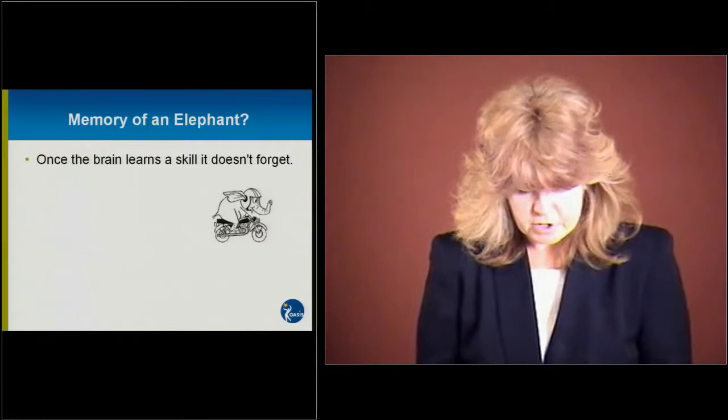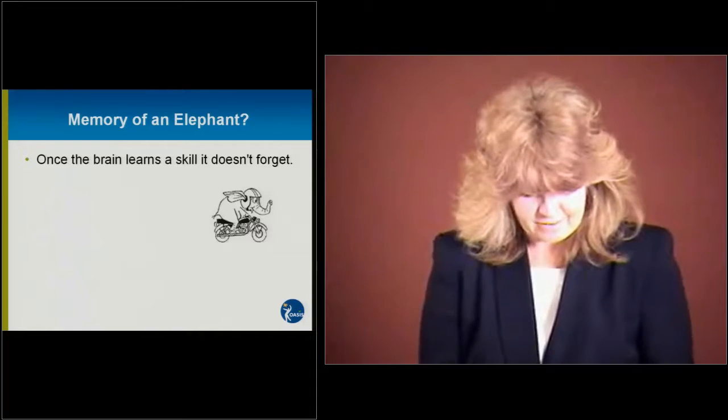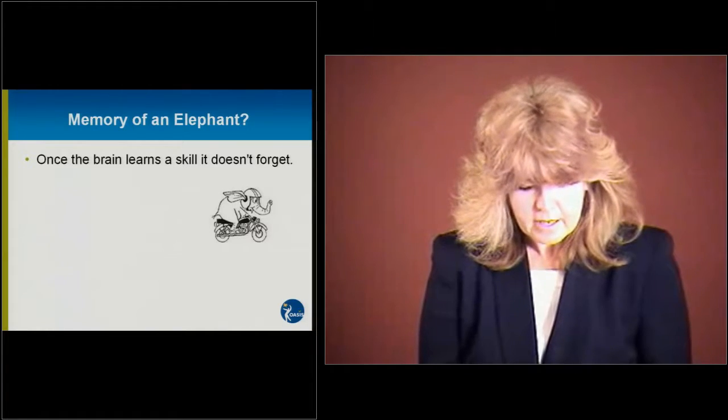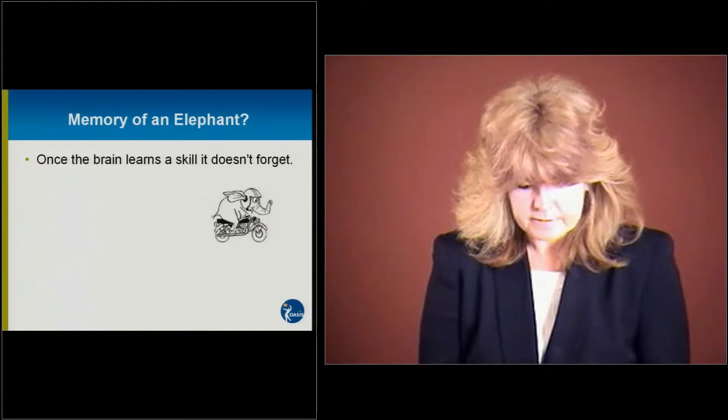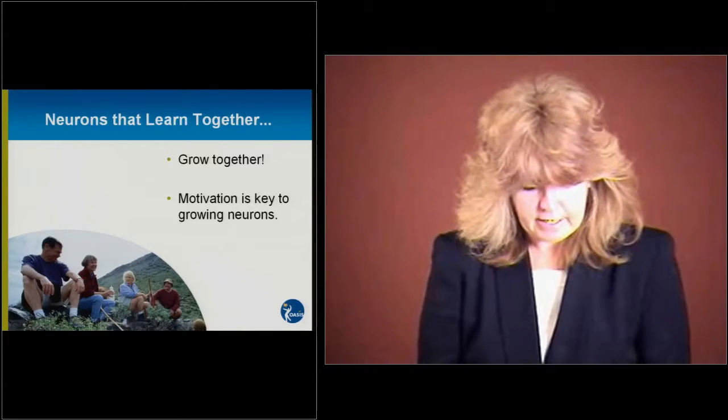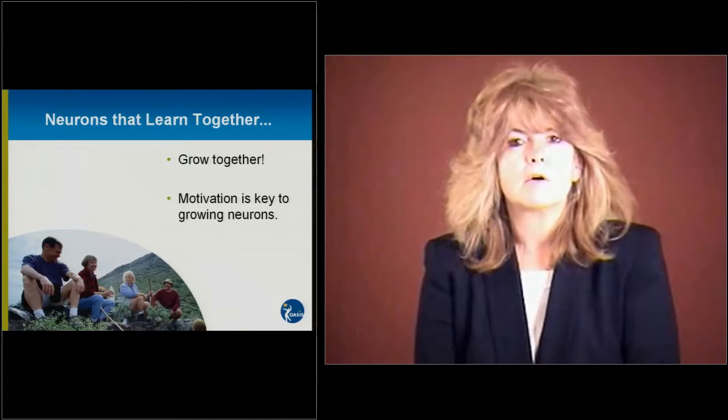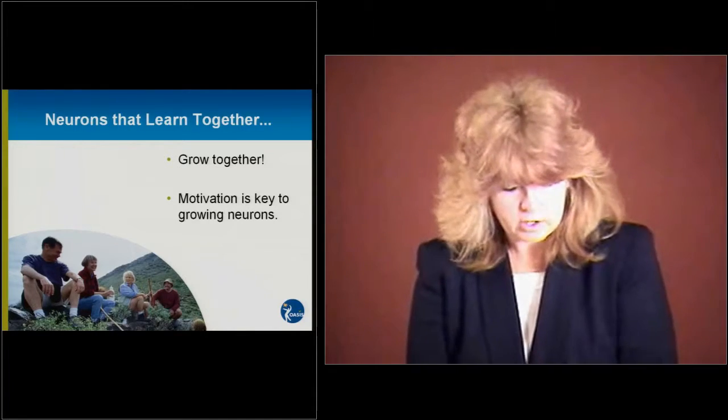And I guess everybody's pretty much heard the term memory of an elephant. Once the brain learns a skill, it doesn't forget. And so let's go ahead and look at the components of brain fitness. And the first thing we're going to look at is neurons that learn together, grow together. And motivation is key to growing neurons.